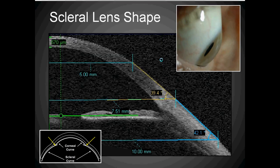OCT studies at Pacific University, led by Patrick Caroline, have shown us that the peripheral cornea, limbus, and sclera begin to form a straight line or tangent shape. The cornea may be curved; however, at approximately 10mm, the eye begins to form this tangent shape which runs past the cornea, through the limbus, and onto the sclera in the majority of eye shapes.